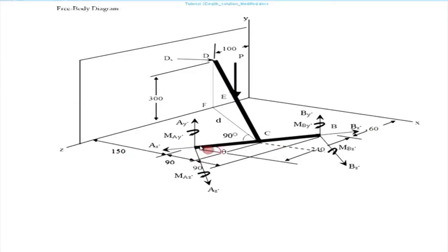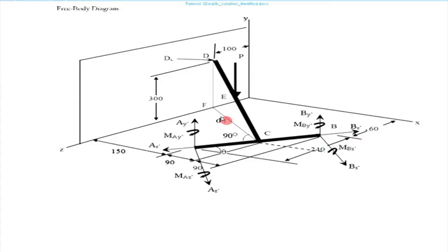We are looking at the component of dx perpendicular to AB. If we call this angle theta, then the perpendicular component will be dx·sinθ. So dx·sinθ multiplied by this vertical height of 300 gives the moment. Ultimately, we need to find theta and the small distance d.